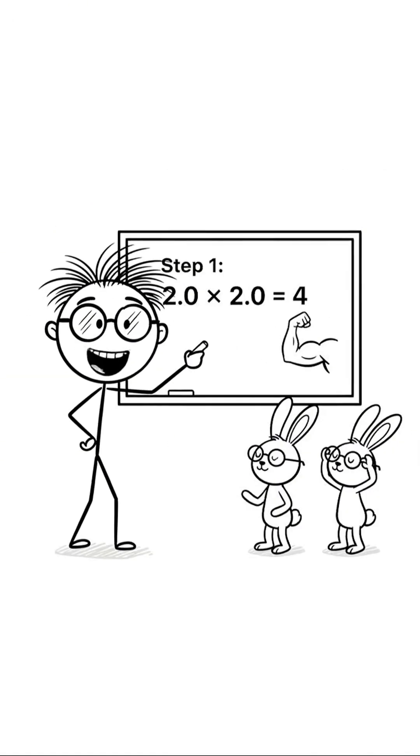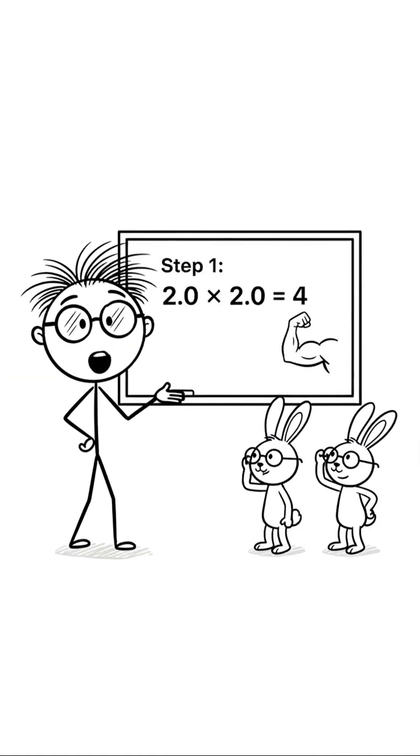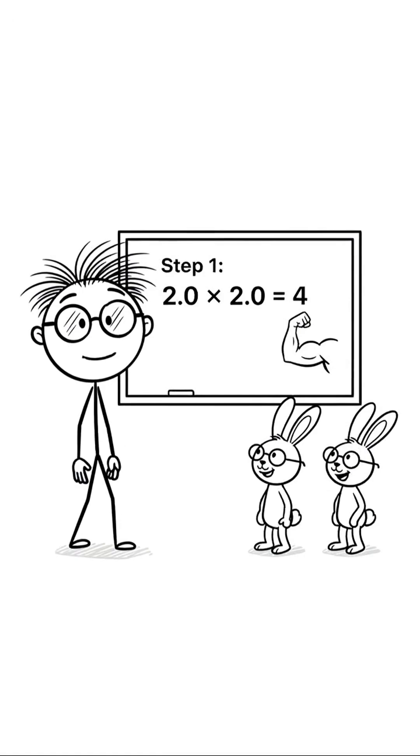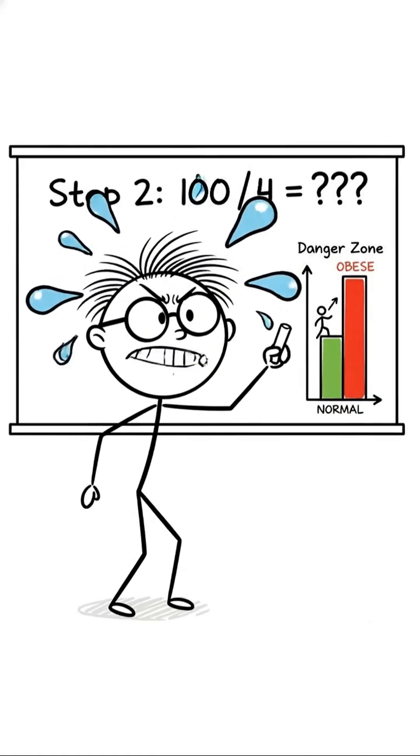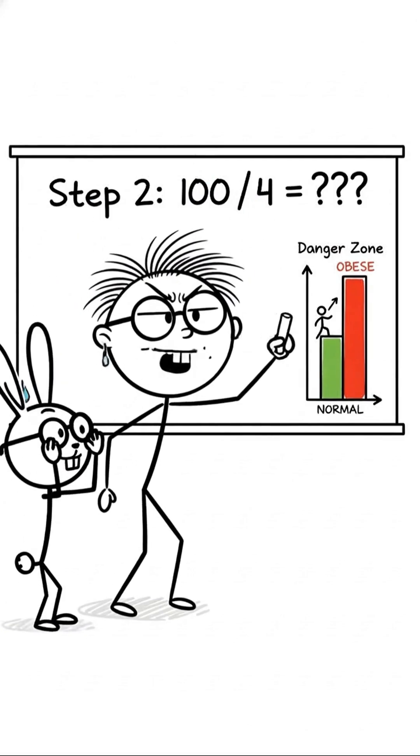First, let's square the height. Two times two equals four. Easy, right? Now we are ready for the final division. Divide the weight by the height squared. Hundred divided by four.